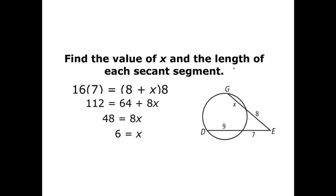We're also supposed to find the length of each secant. Well finding ED is fairly easy, 7 plus 9 is 16. And then finding EG, I just have to replace x with the 6 that I found, so 8 plus 6 is 14.